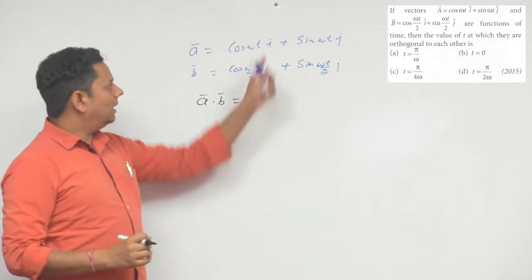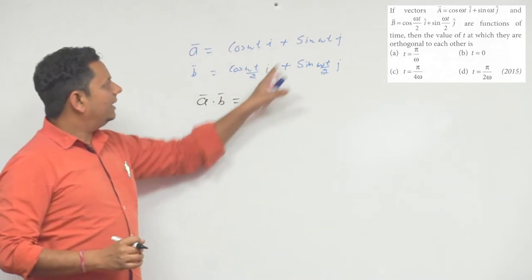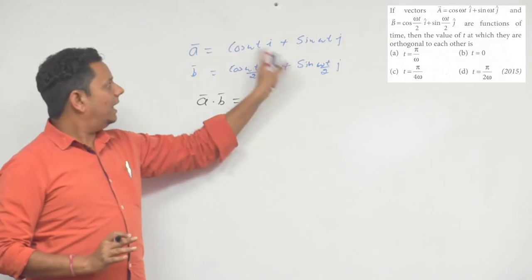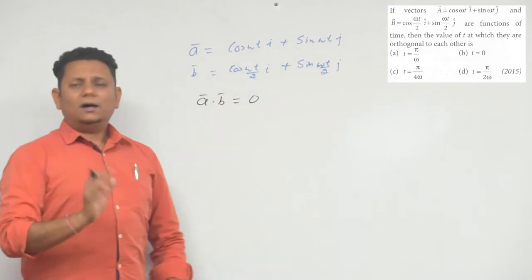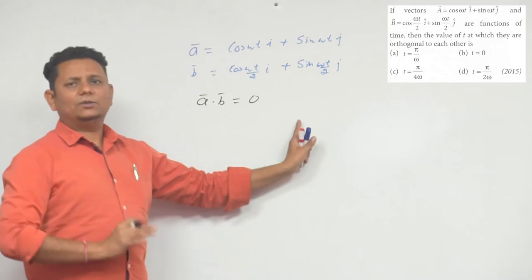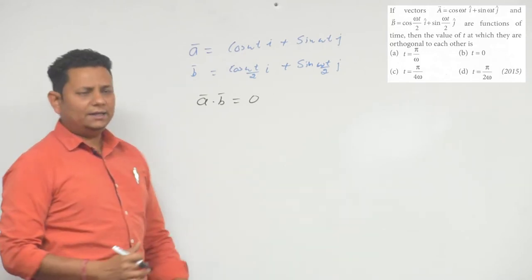और अपने को ये भी पता है कि जब भी हम दो vectors को dot product करते हैं तो i i और j j ये values आती हैं. i dot j और j dot i 0 होजाता है because उन दोनों के बीच में angle 90 degree होएगा.